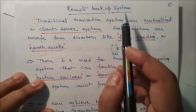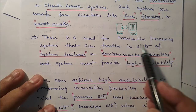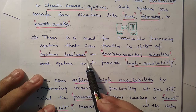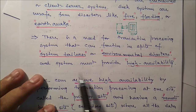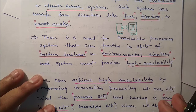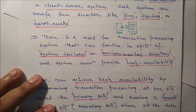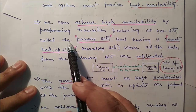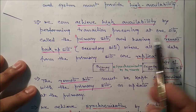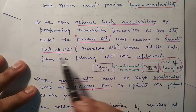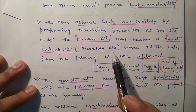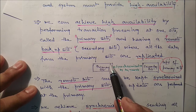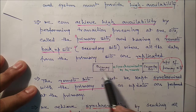That's why we need a remote backup system. There is a need for transaction processing systems that can function in spite of system failures or environmental disasters, and the system must provide high availability. We can achieve high availability by performing transaction processing at one site called the primary site and having a remote backup site, also called secondary site, where all the data from the primary site is replicated.